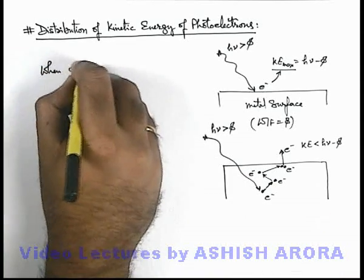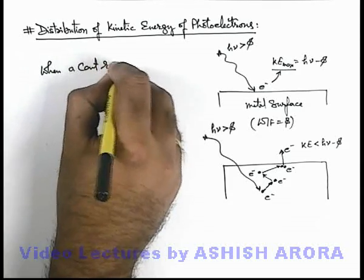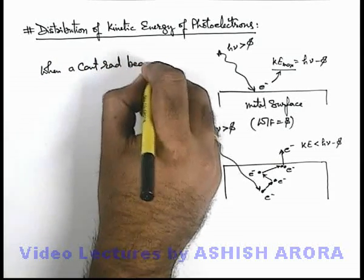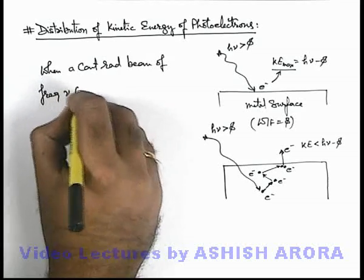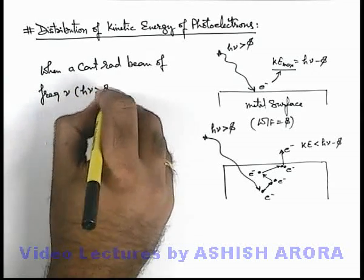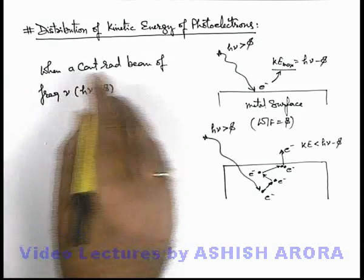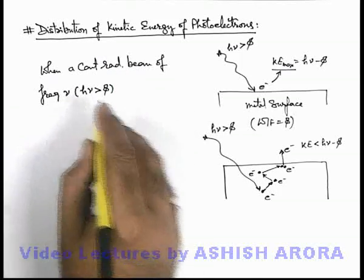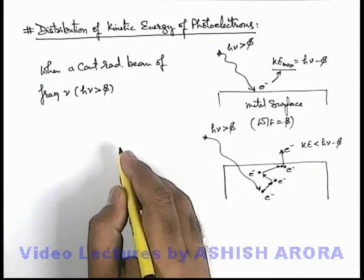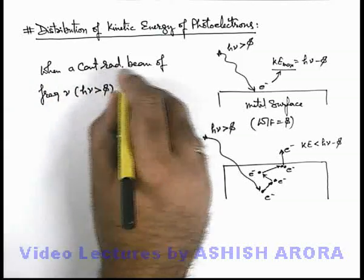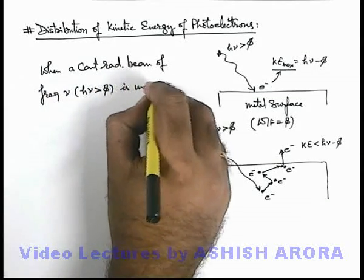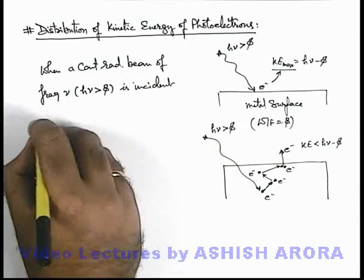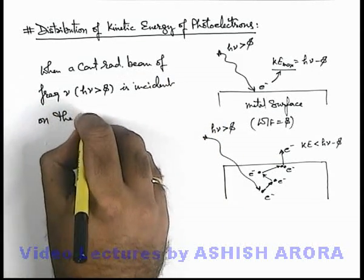So here we can say, when a continuous radiation beam of frequency ν, such that hν is more than φ, that means all the photons in the radiation beam are capable of ejection of electrons, then when a continuous radiation beam of frequency ν is incident on the metal surface